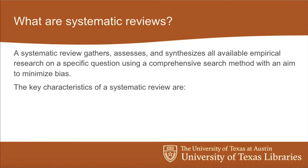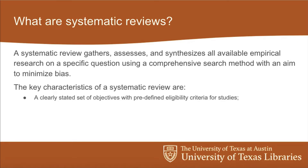That minimizing bias is a huge part of systematic reviews. We've got a few key characteristics to focus on. The first is a clearly stated set of objectives with a predefined eligibility criteria for studies. This can vary a little based on your discipline — there may be different expectations on whether you absolutely have to have all eligibility criteria determined and registered in advance with a protocol, or whether there's a little more flexibility. Generally, you'll want to have all of that figured out before you start screening any literature.